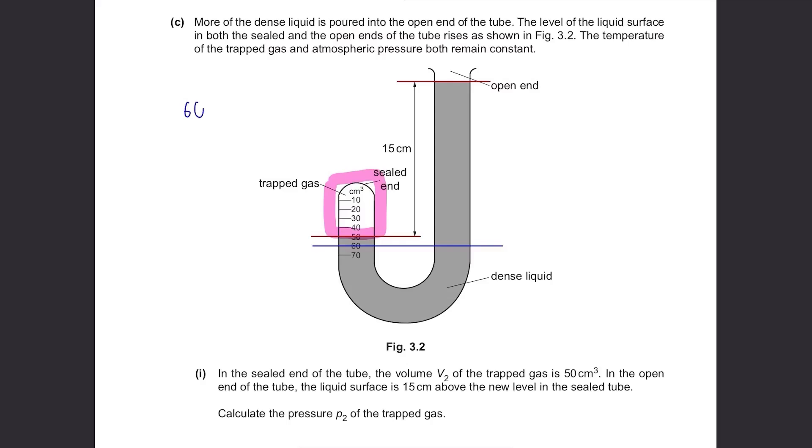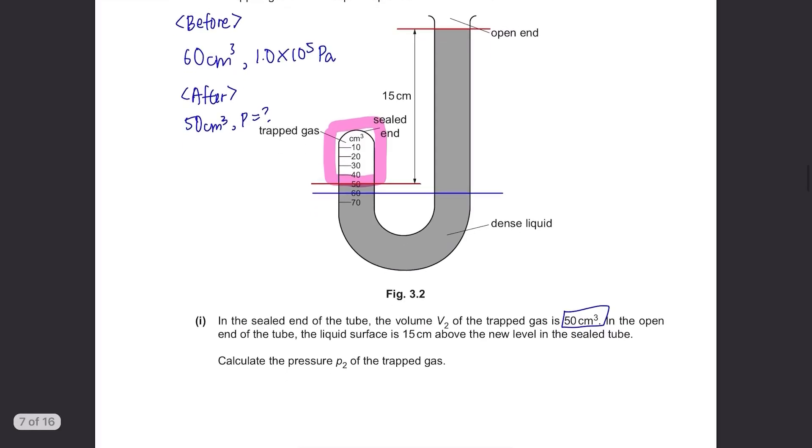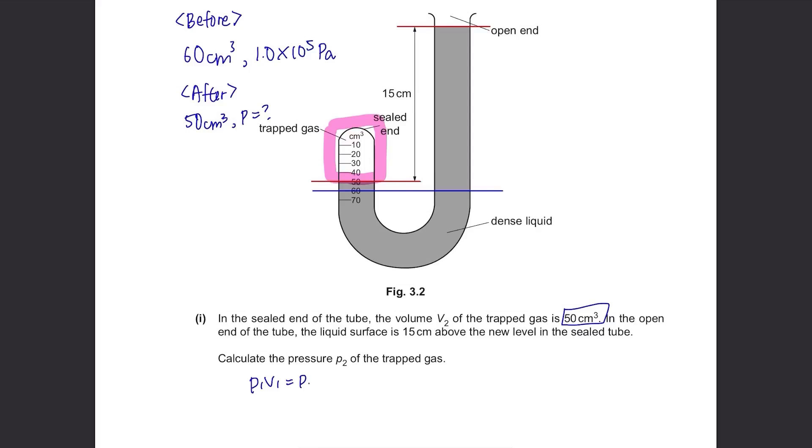At first, its volume was 60 cm3 and its pressure was the same as the atmospheric pressure which is 1.0 times 10 to the power of 5 pascal. Now, after pouring the liquid, its volume decreased to 50 cm3 and we need to find the pressure. Well, we know Boyle's law which is P1V1 equals P2V2 meaning under constant temperature in a closed container, the product of pressure and volume remains constant. We know P1V1 and V2 so rearrange this equation to find P2. 1.0 times 10 to the power of 5 times 60 divided by 50 equals 1.2 times 10 to the power of 5 pascal.